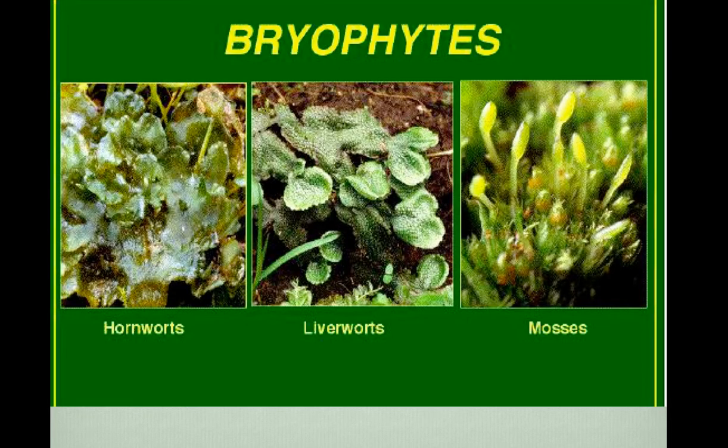The first group of plants are the bryophytes. These are non-vascular seedless plants. Bryophytes include mosses, liverworts, and hornworts. The phylum Bryophyta contains the mosses. The phylum Hepatophyta contains the liverworts. And the phylum Anthocerophyta contains the hornworts. These were the earliest plants that evolved before vascular plants. The gametophytes are the dominant phase, which is true of only bryophytes, not the other three groups of plants.